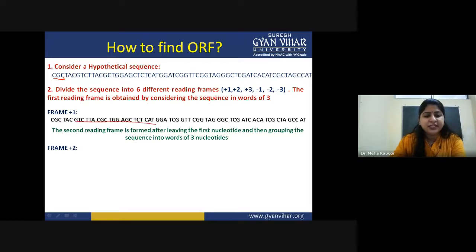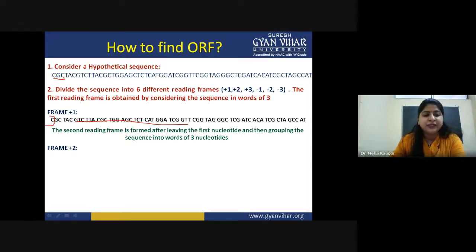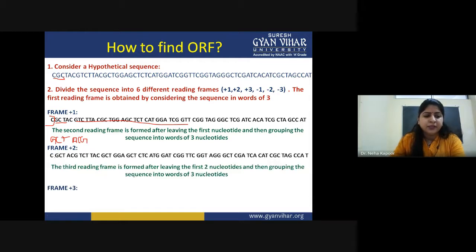The second reading frame is formed by leaving the first nucleotide and starting from the second nucleotide. So the frame would begin G, C, T — then A, C, G — and so on. The first nucleotide C is left out, and the reading frame continues GCT, ACG, and so on. You can construct the complete reading frame from that starting position.